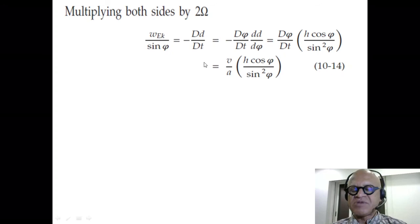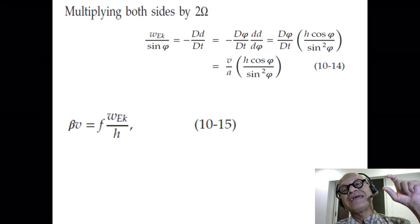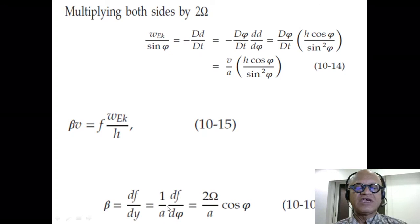Writing the same equation again, remembering our βv = f·dw/dz. But dw/dz can be written as W_Ekman over H approximately, because W at the surface is 0 and our Δz is H. So it's W_Ekman over H. β is of course df/dy. f is 2Ω·sin φ, so we can plug that in and get β to be 2Ω over A·cos φ.